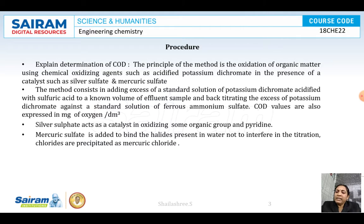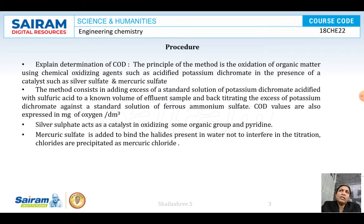For the back titration procedure: pipette out 25 ml of the given wastewater sample and also pipette out 25 ml of potassium dichromate. Add 2 test tubes of sulfuric acid containing silver sulfate and mercuric sulfate. Silver sulfate is used as a catalyst for oxidizing some organic compounds and pyridine. Mercuric sulfate is added to bind the halide ions - particularly chloride ions - present in water to avoid their interference in the titration.